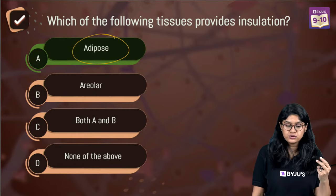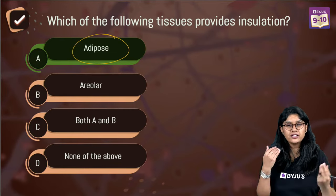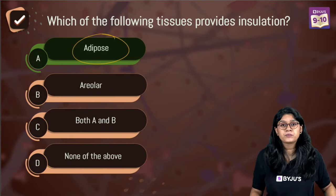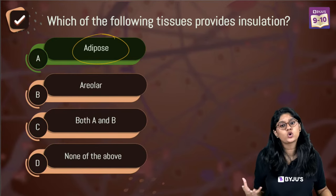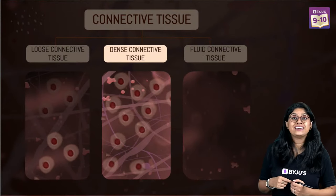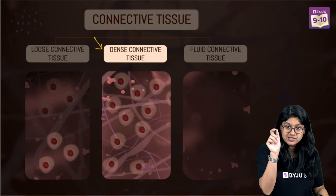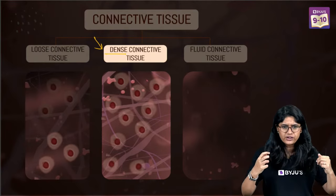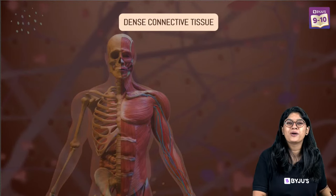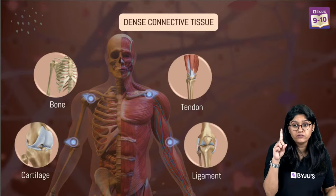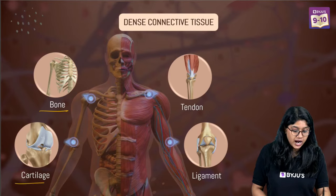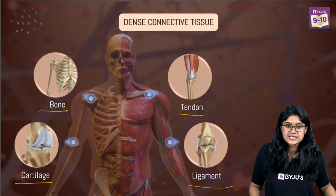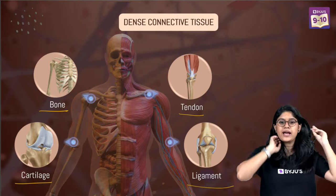Now we are moving to the dense connective tissue. The word dense itself explains a lot - cells are tightly packed with each other. When we talk about the dense connective tissue, we don't just have one type. We have four different types: bone, cartilage, tendon and ligament. By looking at the names only we can easily understand what we'll be learning.